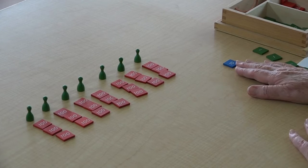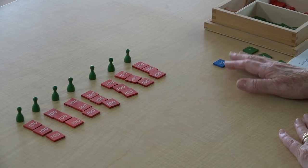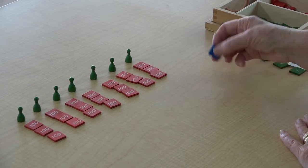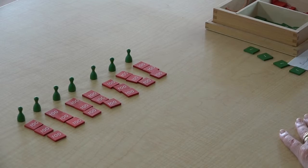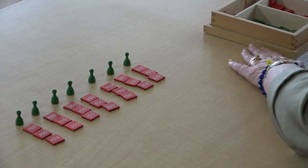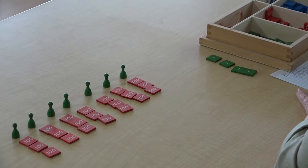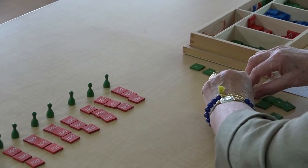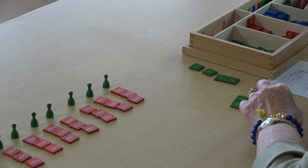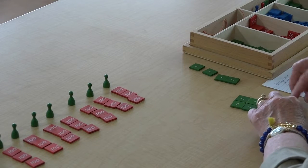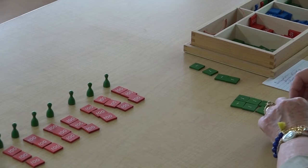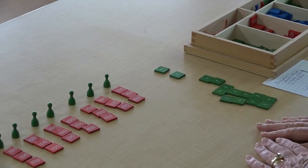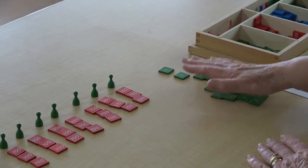So we go to the next hierarchy which is tens and we want to share equally but we only have one of them so we can't. So what do we have to do with this ten? We have to exchange it for 10 units. 2, 4, 6, 8, 10. Now we have our 10 and our 4 so we have 14 we can share equally. Let's see.